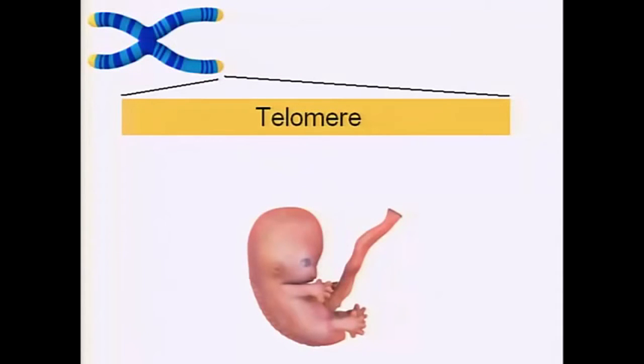But here is where the whole problem is. As soon as our cells start dividing, the telomeres get shorter. Every time a cell divides, a human cell divides, the telomeres get shorter by about 50 to 100 bases.